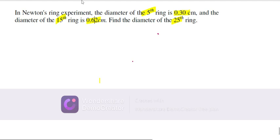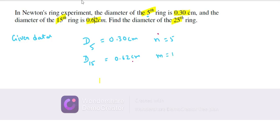First, the given data: for m=5, diameter of the 5th ring D₅ = 0.30 cm. For m=15, diameter of the 15th ring D₁₅ = 0.62 cm. We need to find D₂₅ for n=25.